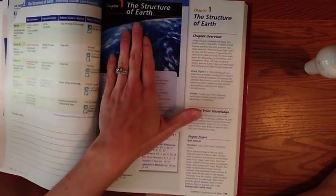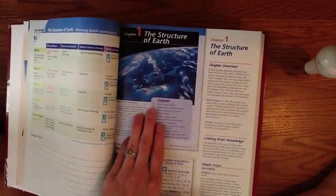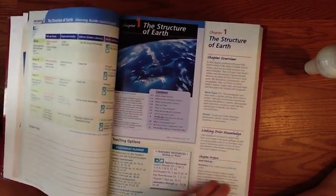It's going to show you what the student sees here in the middle. This is what the student textbook looks like. And then this is going to be your teacher notes around the outside.